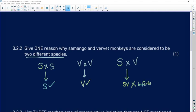And that is one of the reproductive isolation mechanisms that although these are two different species, they are unable to produce fertile or viable offspring. So one reason why they're considered to be two different species is that the offspring of a mating of Samango and vervet produces infertile offspring.